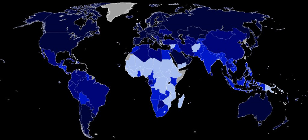The 2010 Human Development Report introduced an Inequality Adjusted Human Development Index. While the simple HDI remains useful, it stated that the IHDI is the actual level of human development, accounting for inequality, and the HDI can be viewed as an index of potential human development, or the maximum IHDI that could be achieved if there were no inequality.